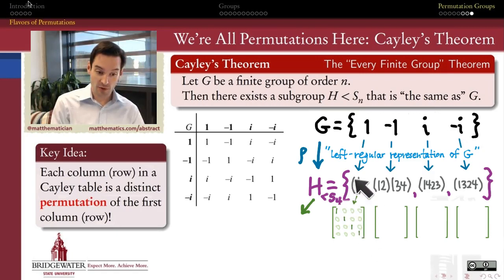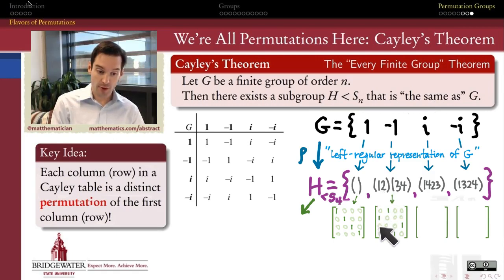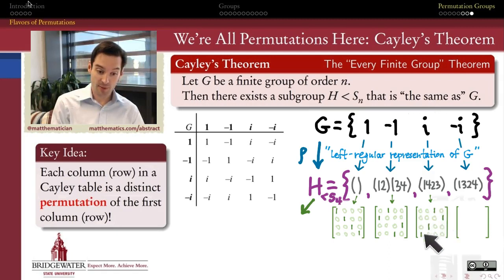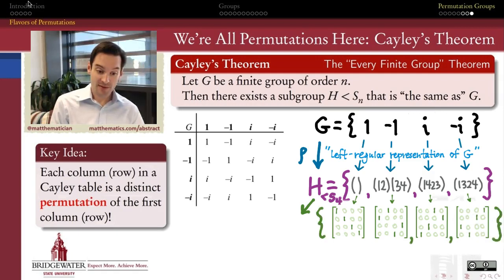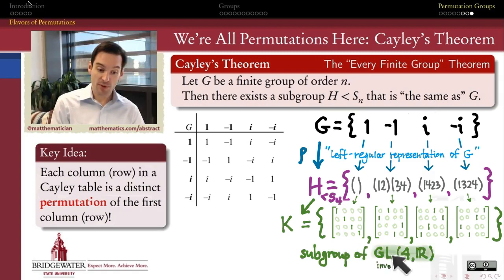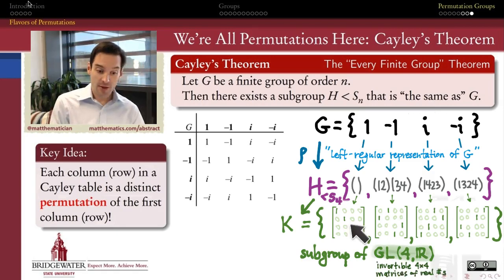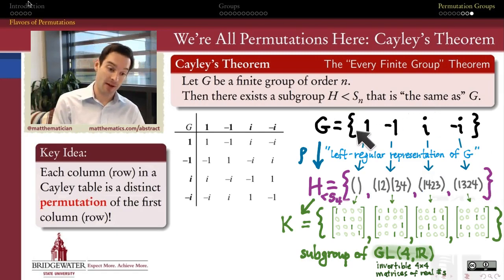Here's a 4×4 identity matrix for the identity permutation of S4. The cycle (1 2)(3 4) means swap the first and second rows and the third and fourth rows of the identity matrix, and we get a matrix that represents this permutation. Similarly, with (1 4 2 3) we do those row swaps to get this permutation matrix, and (1 3 2 4) gives that permutation matrix. So this set of four 4×4 matrices will also be a subgroup of the group of all invertible 4×4 matrices of real numbers. This subgroup — these four matrices — behave in exactly the same way as these four permutations, which behave the same way as these four elements of our original group.